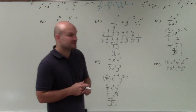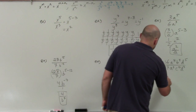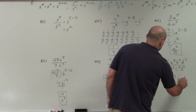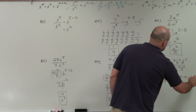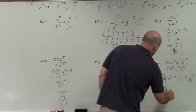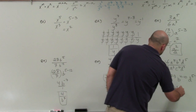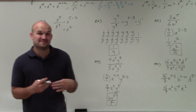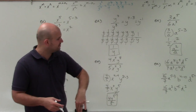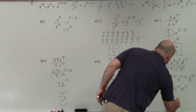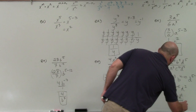Lastly, 16 over 7 cannot be reduced, so I'll leave that as 16 over 7. Then I have a to the 5 minus 3, b to the 4 minus 10, and d to the 5 minus 3. That gives me a squared, b to the negative 6, and d squared. To make b to the negative 6 positive, I put it in the denominator with the 7. So my final answer is 16a squared d squared, all over 7b to the sixth power.